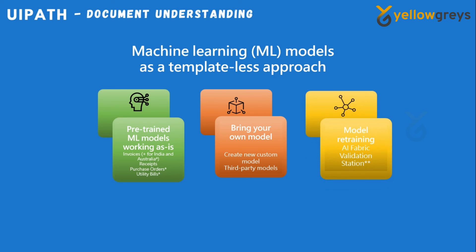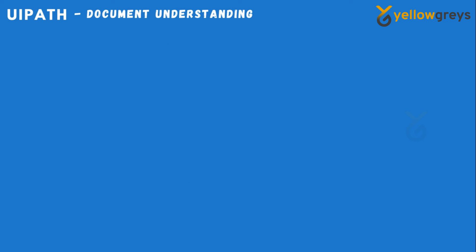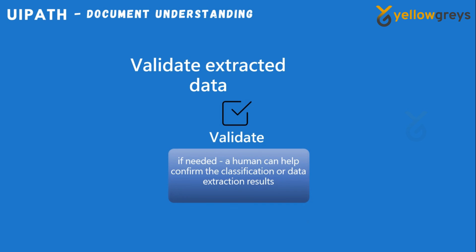The final stage of document validation is Validate Extracted Data. You will get the Validation Station, which enables users to review and correct document classification and automatic data extraction results.